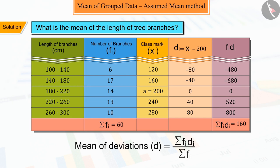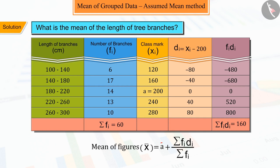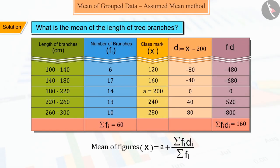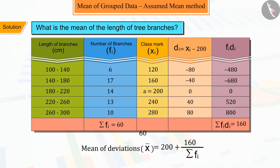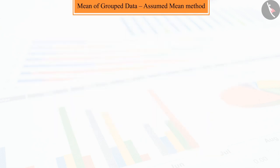But you must remember that to find di, we subtracted A from each xi. So, while finding the mean, we have to add A in D bar, which is explained as below, from which the mean of the lengths of the branches is calculated as approximately 202.66 centimeters.